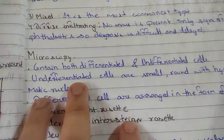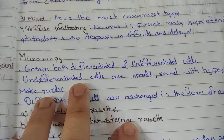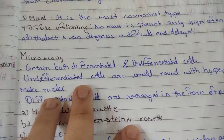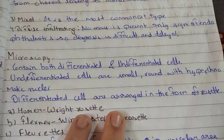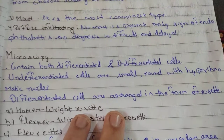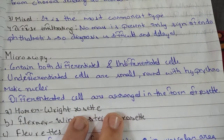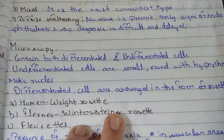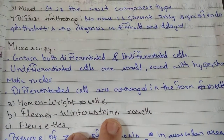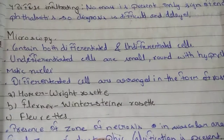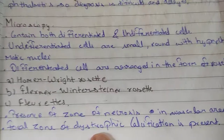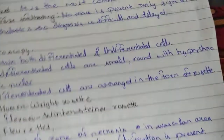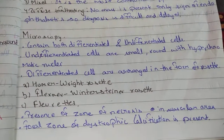Regarding microscopic features, the tumor contains both differentiated and undifferentiated cells. Undifferentiated cells are small and round with hyperchromatic nuclei. Differentiated cells are arranged in the form of rosettes: Homer Wright rosettes, Flexner-Wintersteiner rosettes, and fleurettes. A zone of necrosis in avascular areas can be seen, and focal zones of dystrophic calcification are present. That's all about retinoblastoma.